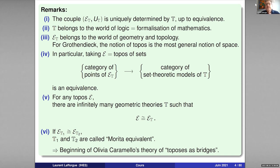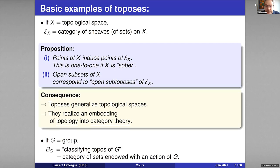Now I want to explain the different ingredients in the theorem. The first ingredient is of course the word topos, so I want to recall what a topos is. In order to have an idea, we need to begin with examples. The first example consists of toposes associated to topological spaces. This is really how toposes were born: starting from any topological space, it is possible to associate to it the category of sheaves of sets on the topological space X.